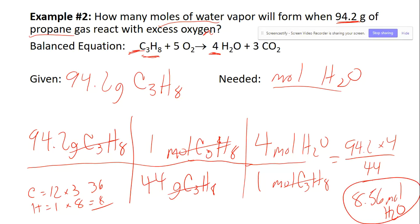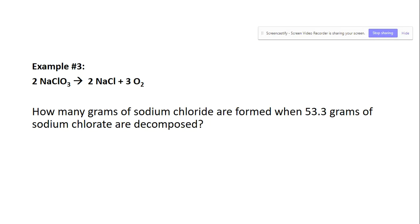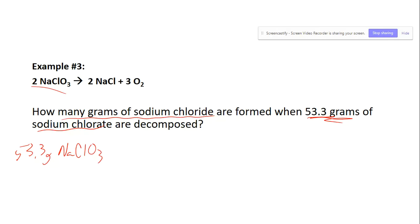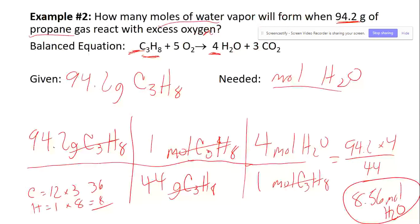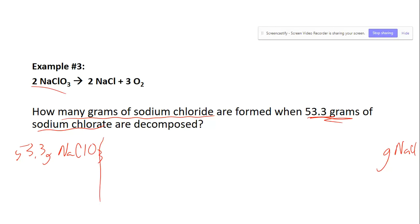Example three: the given is 53.3 grams of sodium chlorate (NaClO₃), and we're looking for grams of sodium chloride (NaCl). This means it's one of the long problems — starting with grams and finishing with grams — so we'll need the periodic table twice and the balanced equation once.